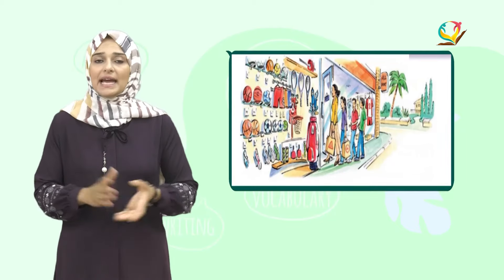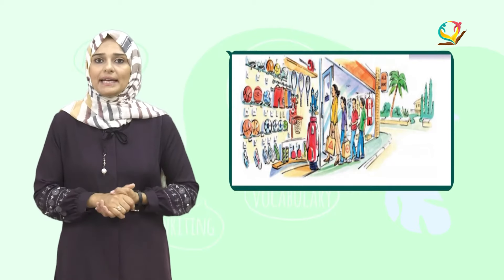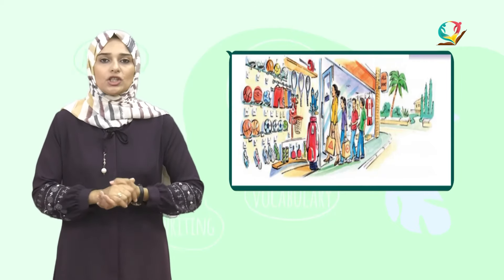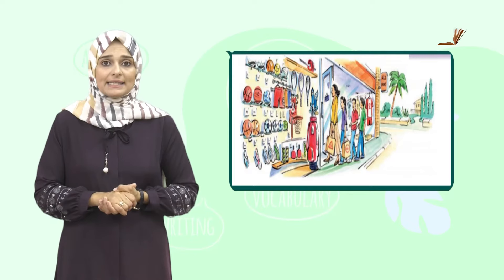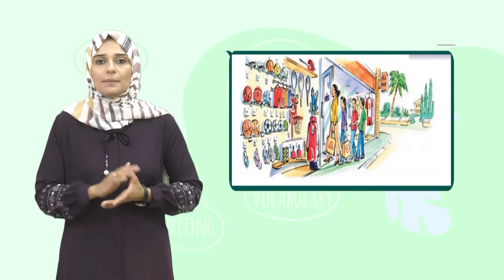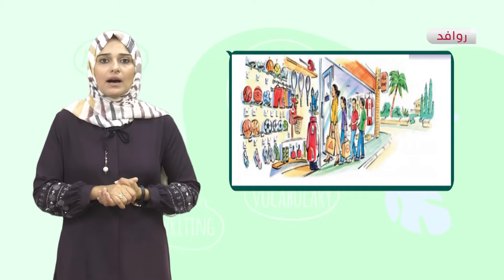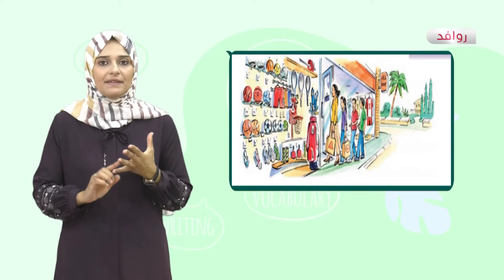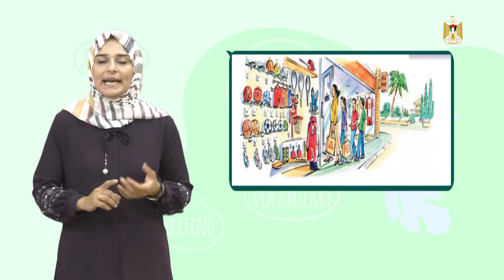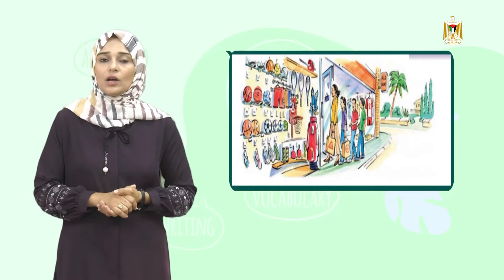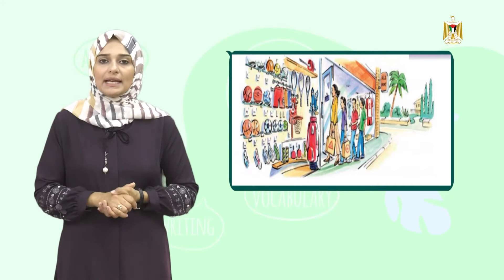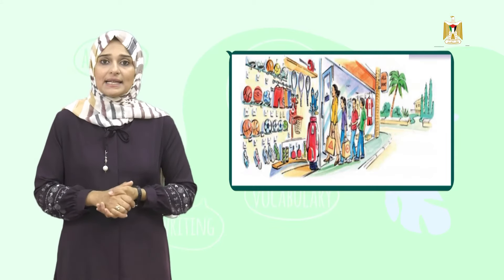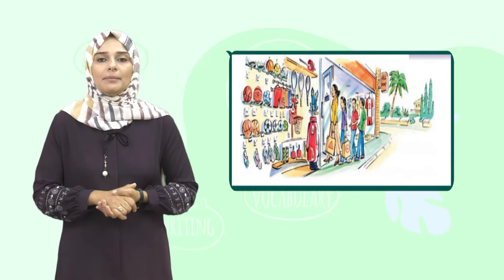Exercise 2. Look at the picture and describe it. What does the picture show? Yes, it's a sports shop. Who are the people in the picture? Well, these are Mrs. Haifawi, Umar, and Yasmin. What are they doing? Yes, they seem to be shopping together.